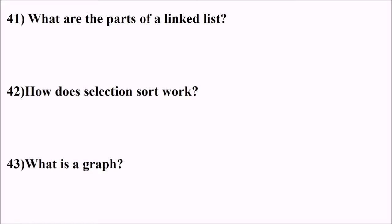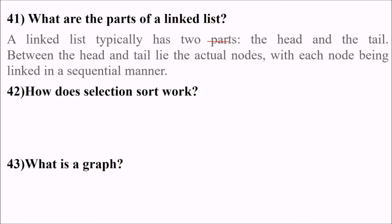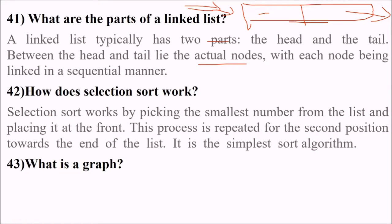What are the parts of a linked list? It has two parts - first of all, the head and the tail. The head and tail contain the actual nodes with each node being linked sequentially. You have a header which contains the address of the node, and this node inside contains the data and the address to the next node. How does selection sort work? We have just seen that it works by picking the smallest number from the list and placing it in the front. This process is repeated for the second position towards the end of the list. This is the simplest sort.